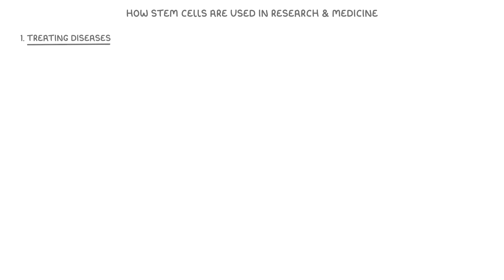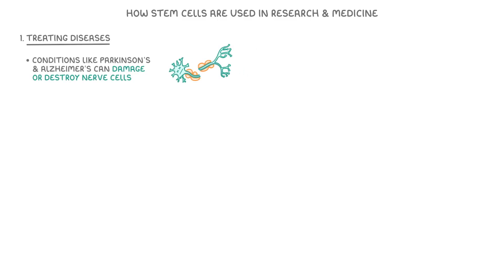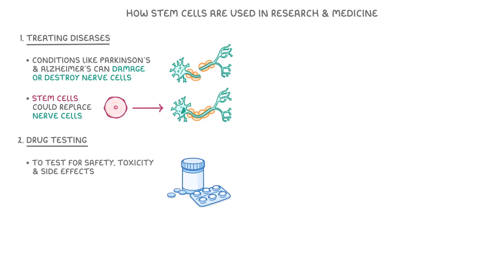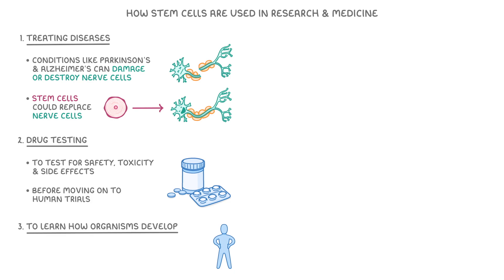Finally, let's take a look at how stem cells are used in research and medicine. One of the most exciting uses is in treating diseases. For instance, conditions like Parkinson's and Alzheimer's can damage or destroy nerve cells, and stem cells could potentially replace those nerve cells in order to help the patient function properly. They're also used in drug testing, allowing scientists to test for safety, toxicity and side effects before moving on to human trials. Researchers also study stem cells to learn how organisms develop from a single cell, and this can help scientists to identify the causes of developmental disorders.